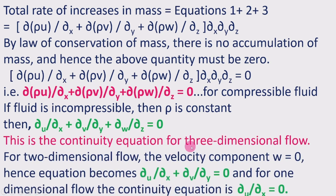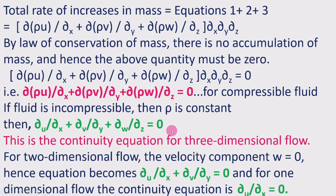This is the continuity equation for three-dimensional flow. For two-dimensional flow, the velocity component w becomes zero, and the equation reduces to ∂u/∂x + ∂v/∂y = 0. Our intention was to derive the three-dimensional continuity equation: ∂u/∂x + ∂v/∂y + ∂w/∂z = 0. This is the continuity equation in three dimensions.